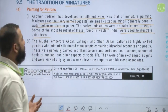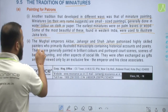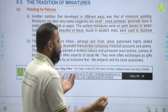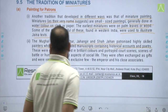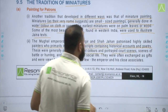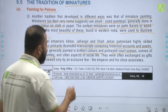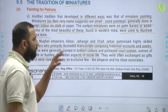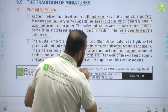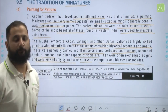The Mughal emperors Akbar, Jahangir, and Shah Jahan patronized highly skilled painters who primarily illustrated manuscripts containing historical accounts and poetry. These were generally painted in brilliant colours and portrayed court scenes, scenes of battle or hunting, and other aspects of social life. They were often exchanged as gifts and viewed only by an exclusive few — the emperor and his close associates — not on display for everyone.